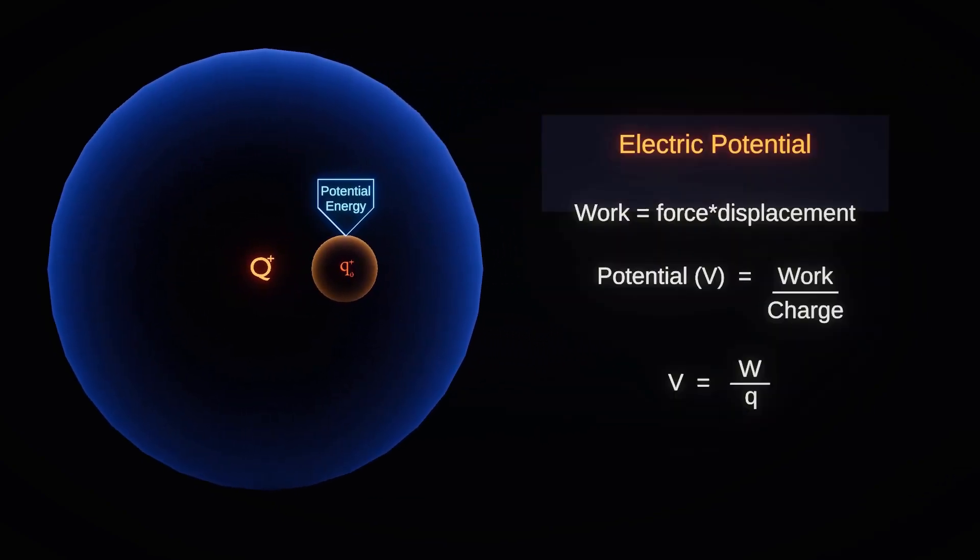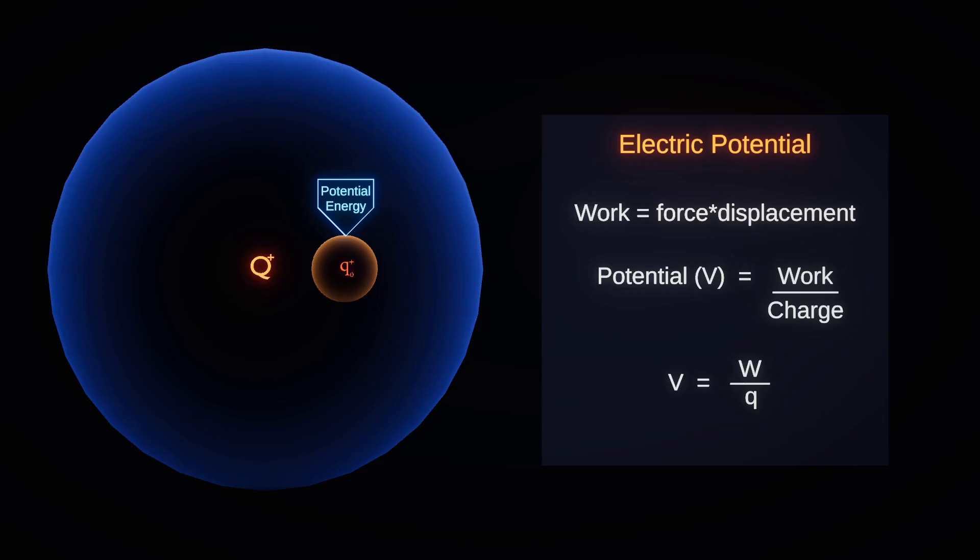Electric potential is denoted by the symbol V.